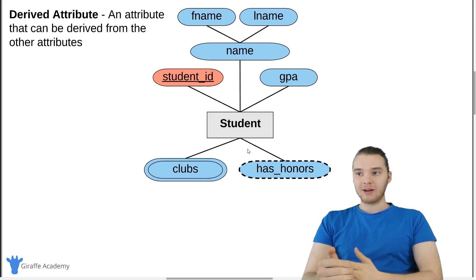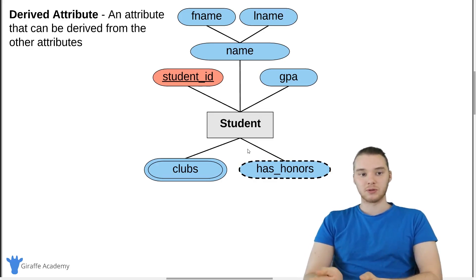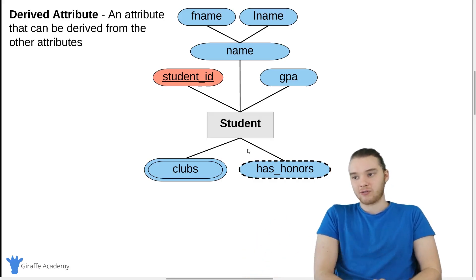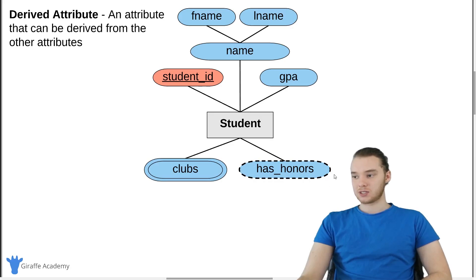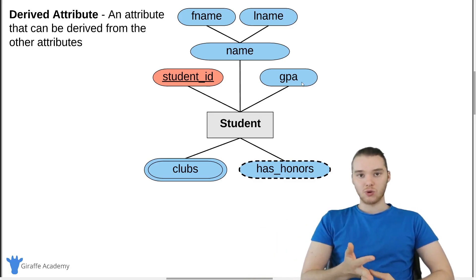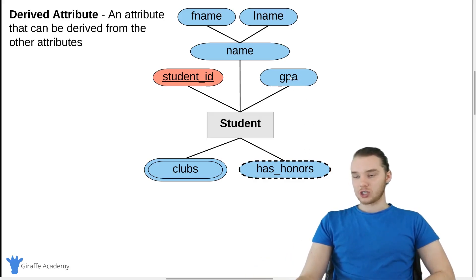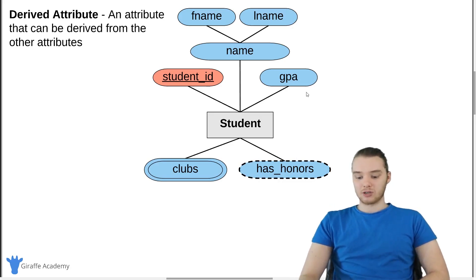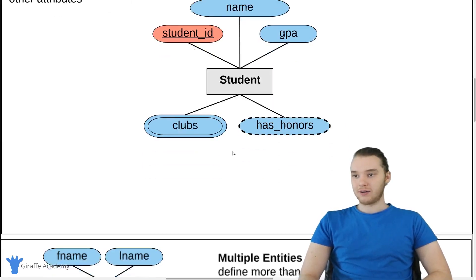Next up is a derived attribute. A derived attribute is an attribute that can be derived from the other attributes we're keeping track of, so we're not going to actually keep track of the derived attribute itself. It's just a way to notate attributes that could be derived from the attributes we're storing. The derived attribute is just an oval with dashed lines — it's called 'has honors.' Has honors is an attribute we could derive from the GPA. Maybe the school says that anybody with a GPA of 3.5 or above is going to have honors. So we could derive that just from the GPA, and we can just denote it like that.